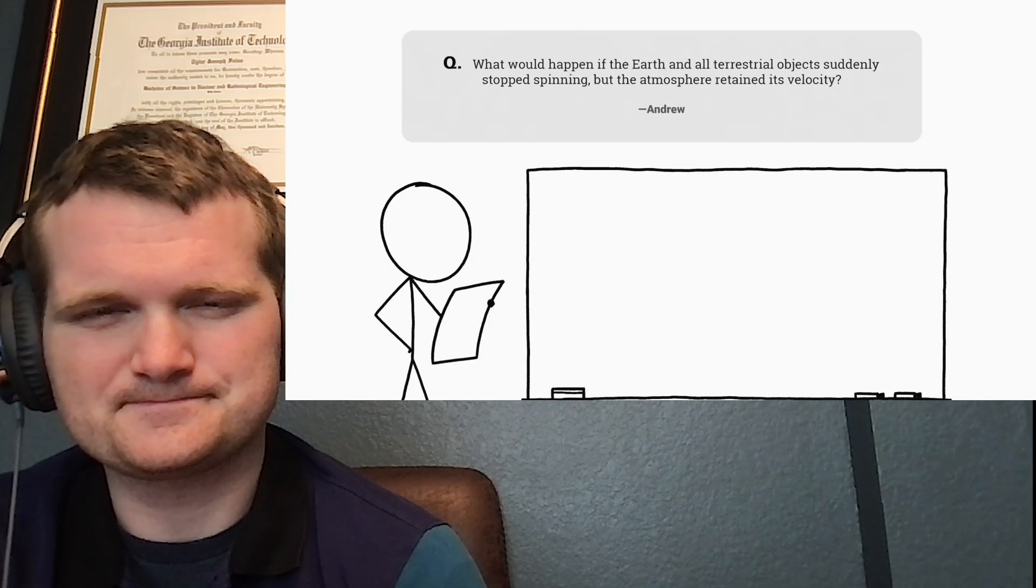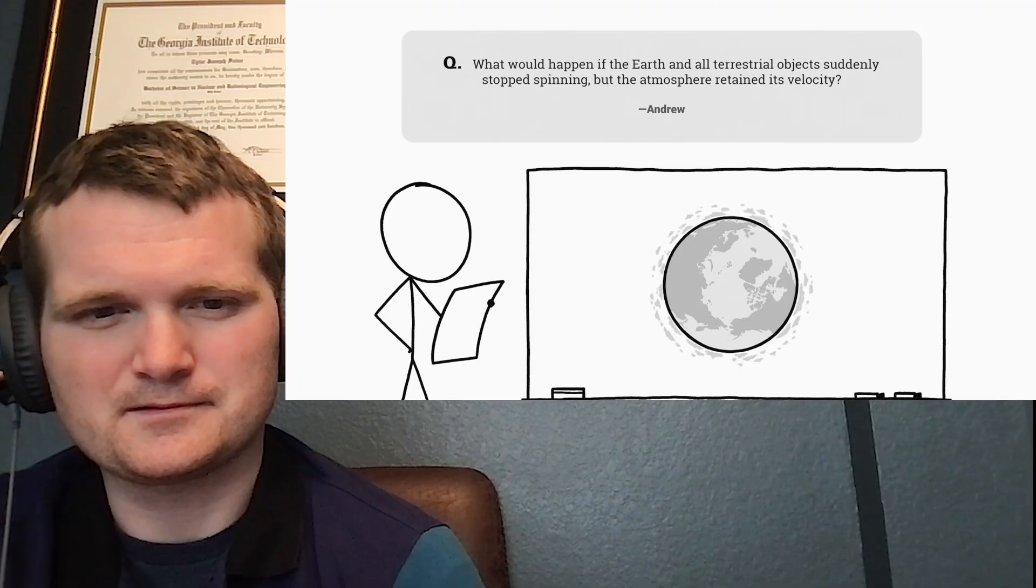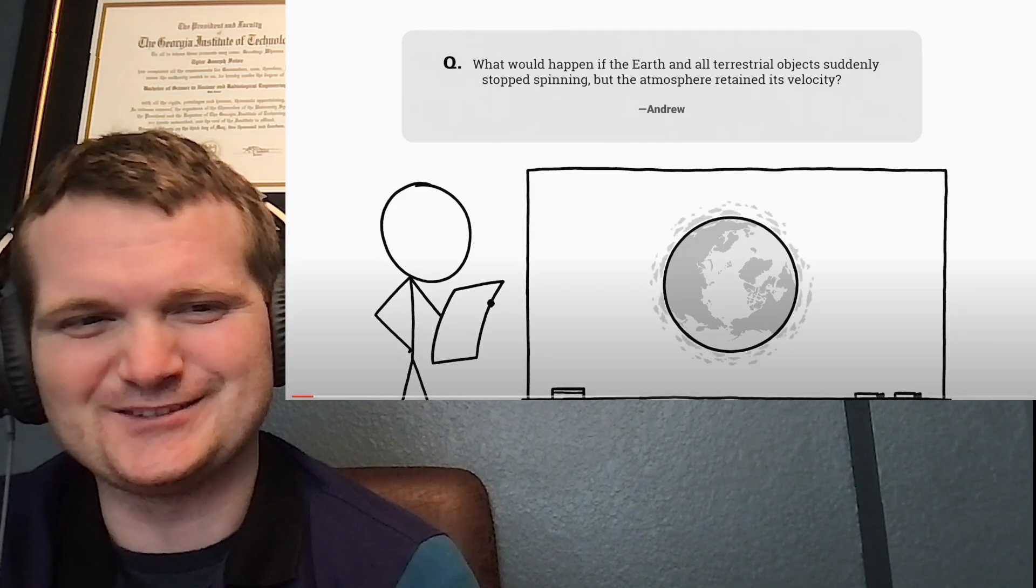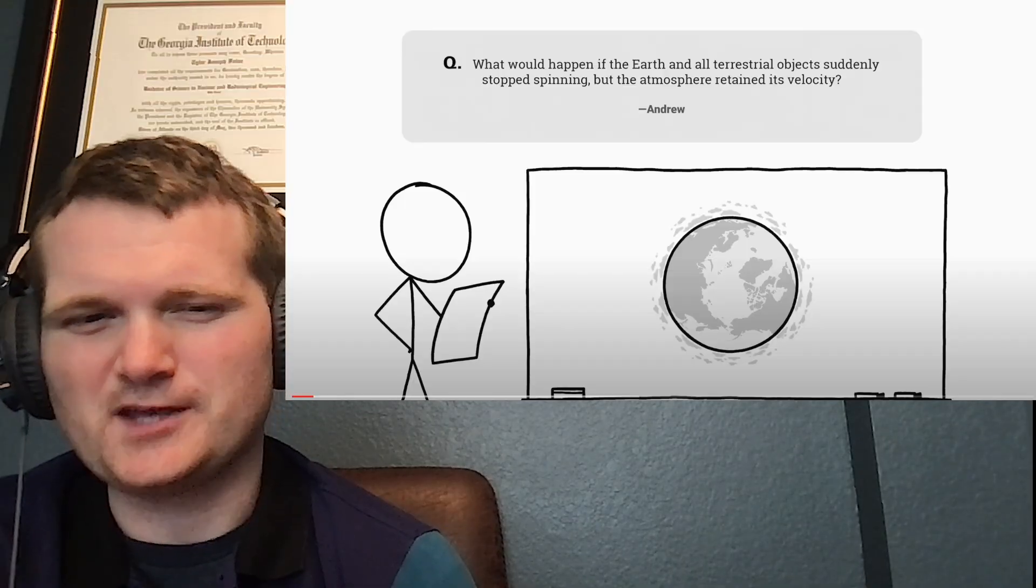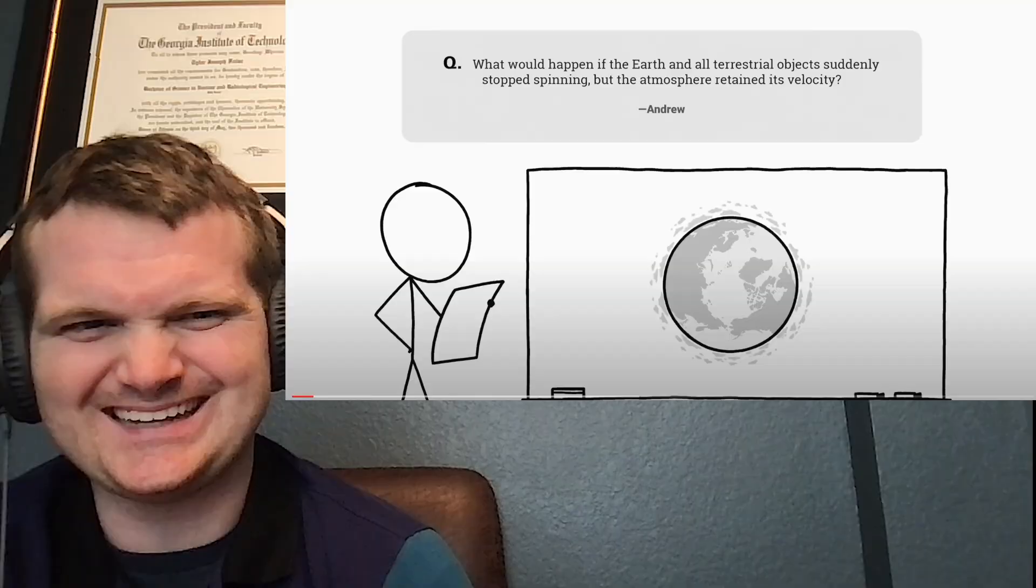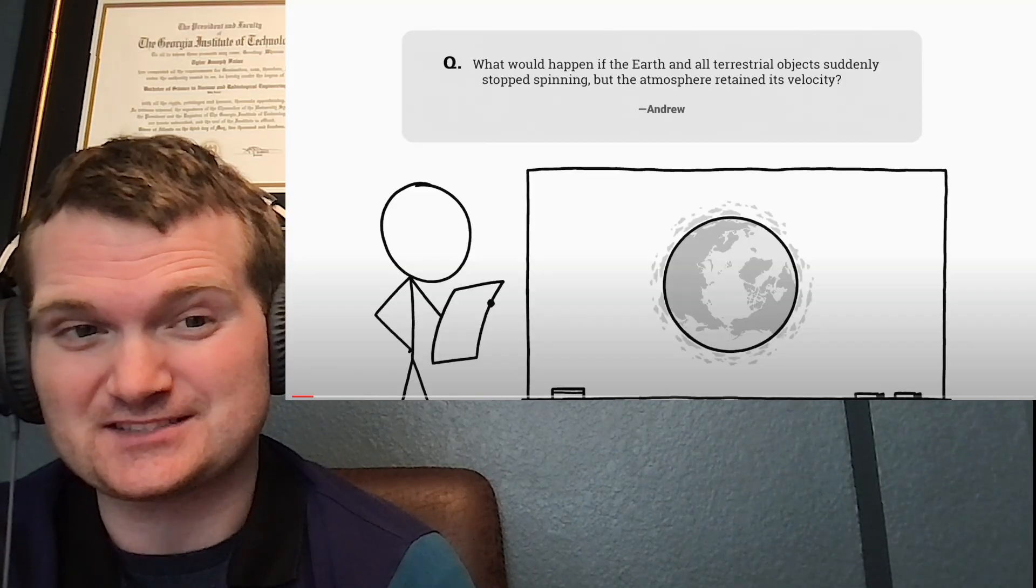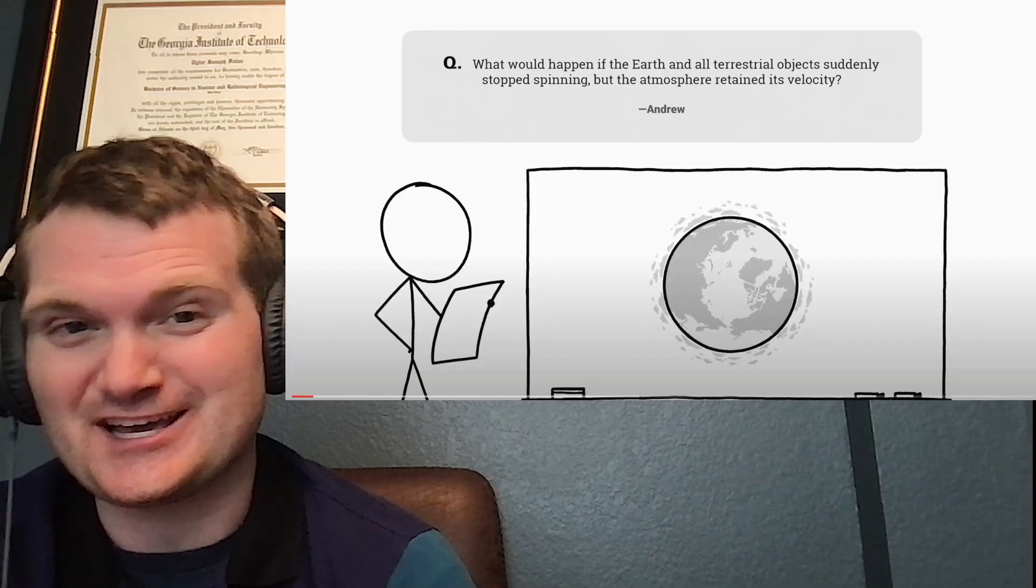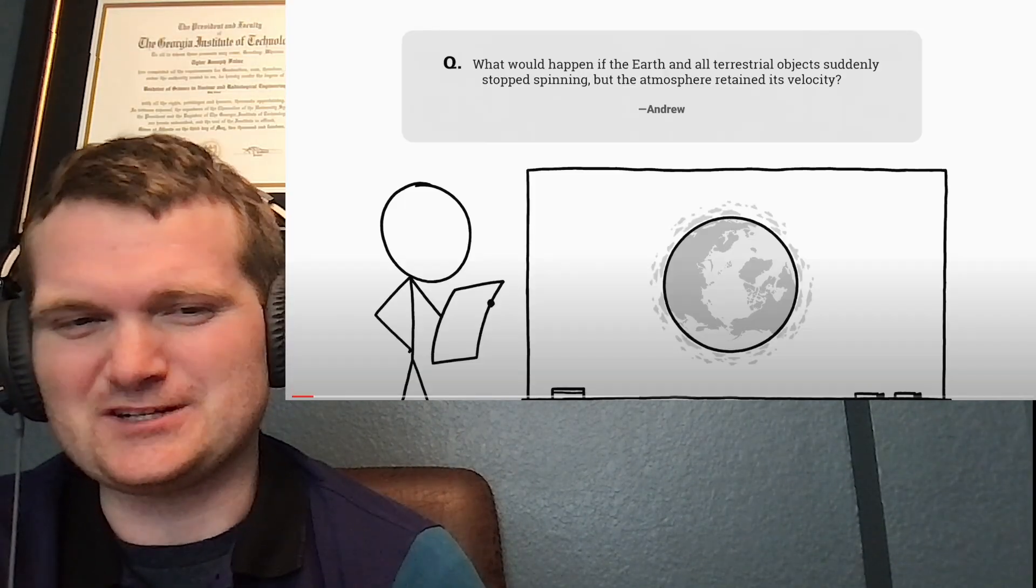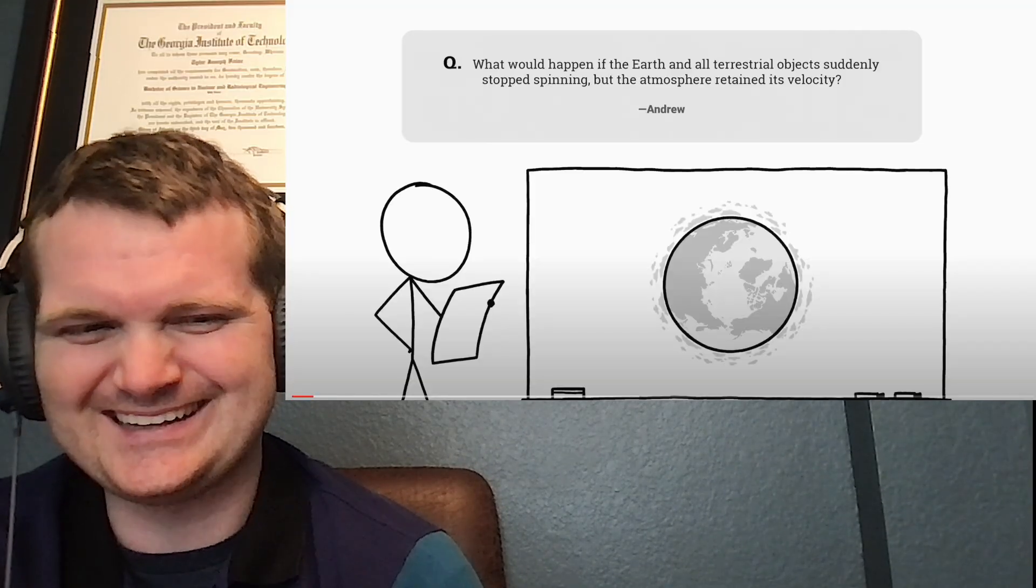This is a question from Andrew who asks, What would happen if the Earth and all terrestrial objects suddenly stopped spinning, but the atmosphere retained its velocity? Okay, so we're not losing the atmosphere. So if you're keeping the atmosphere, well, you're going to have a bunch of violent storms. And a bunch of the particulate matter that's flying at supersonic speed is going to be entangled in said atmosphere. Take a robust atmosphere to somehow maintain it. We're entirely in the realm of magic at this point, so why not?